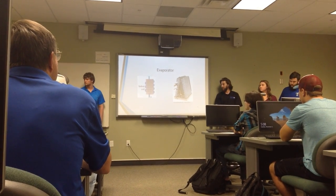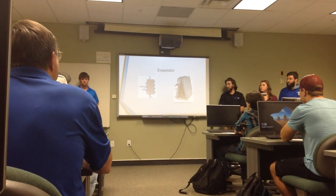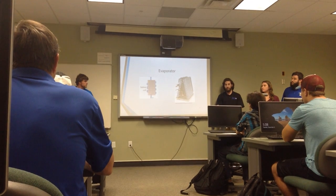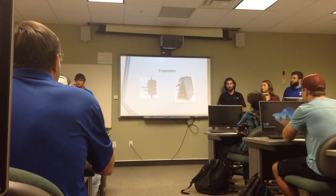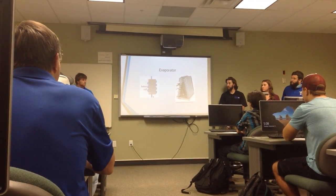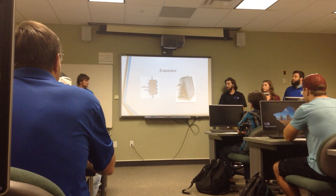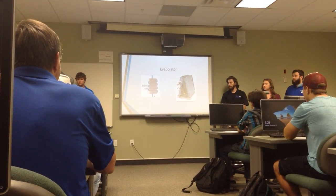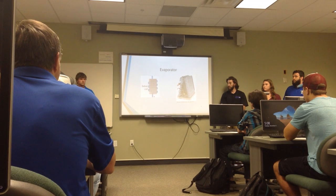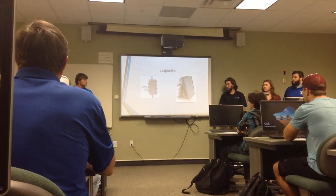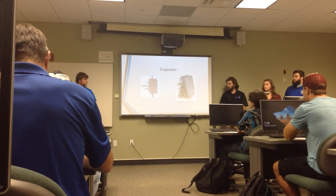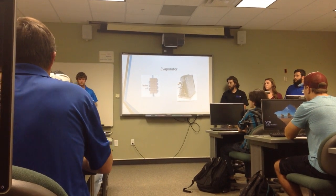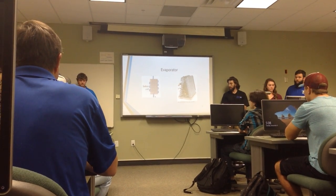Next is the evaporator. The evaporator is located on the indoor unit and is also known as an A coil because of its shape. In this part, warm, humid air goes over the coils filled with cool refrigerant. The warm, humid air is dehumidified and cooled and then pushed out into the ducts.